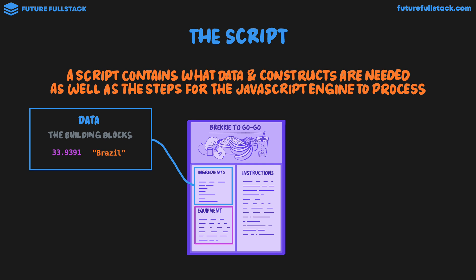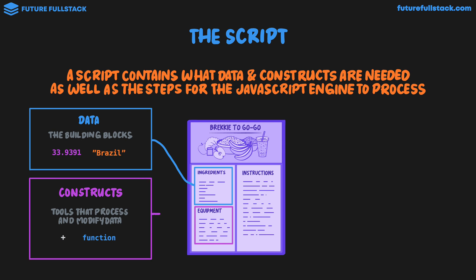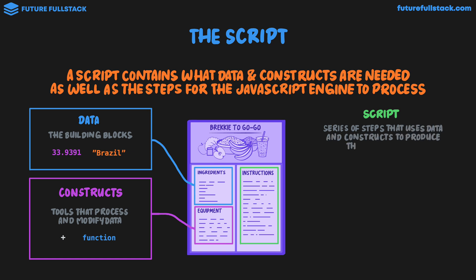The next element of a recipe is the equipment you need — things like knives or a blender. In JavaScript, we call these constructs. They're tools that process and modify data. An example of constructs is a simple plus sign or a JavaScript function, which we're going to be talking about in a lot more detail later. These constructs allow us to modify our data, just like a knife or blender will modify ingredients by slicing them up. The final component of a recipe are the instructions — the steps you need to follow in order to produce the juice. In JavaScript, this is the script: a series of steps that uses data and constructs to produce the final outcome.